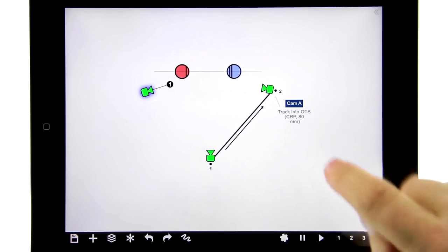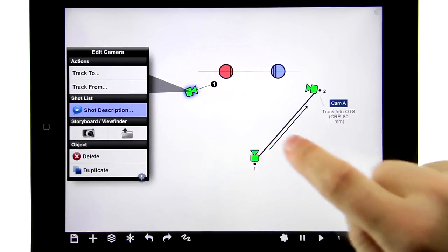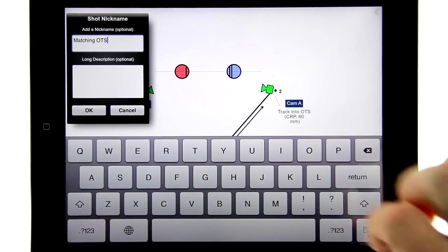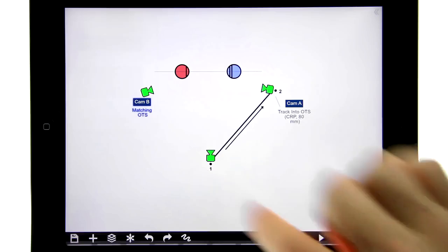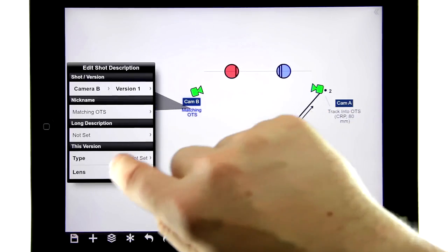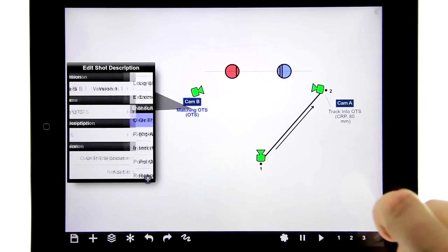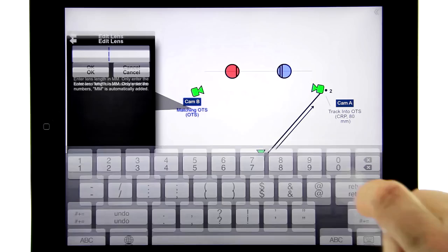There's a matching over-the-shoulder over here, so I'm going to add a shot description for that too. Let's put in a description called 'matching OTS', and in the description I'll set the type here to over-the-shoulder, and then I'll set the lens to also 80 millimeters.